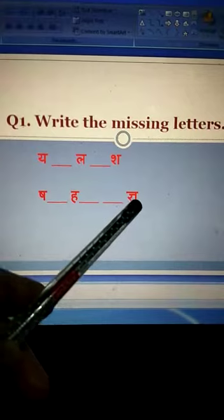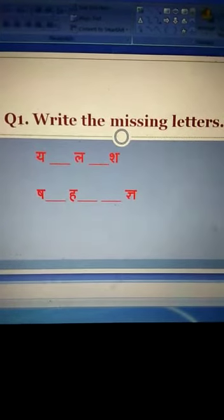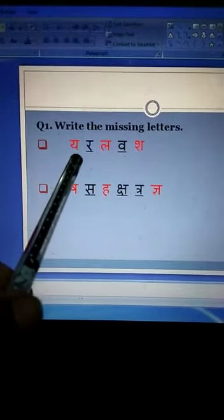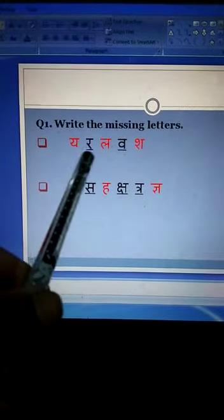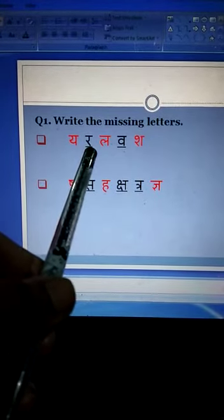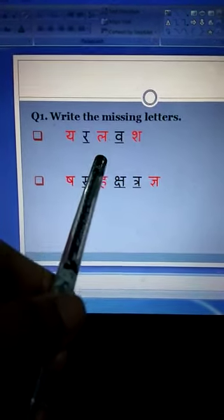So I show you the answer. Children look here. Number 1. Ya ra dash. Ra. Here is ra. Then la.